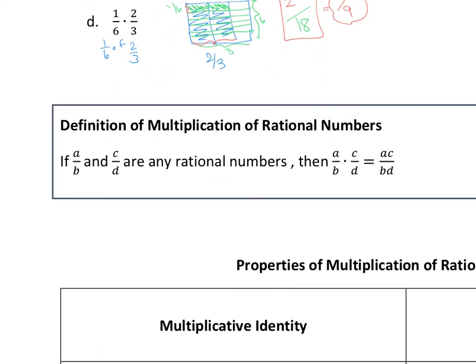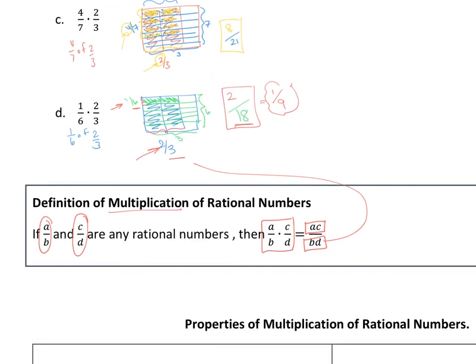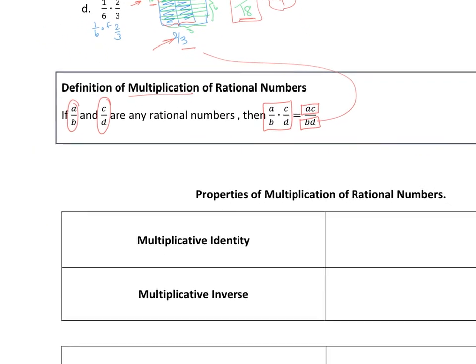From our diagrams, we can see that when multiplying rational numbers, (A/B) × (C/D) means multiplying the numerators together and multiplying the denominators together. The total pieces became three times six equals eighteen for the denominator, and the shaded overlap was two times one for the numerator — that's our definition of multiplication for rational numbers.